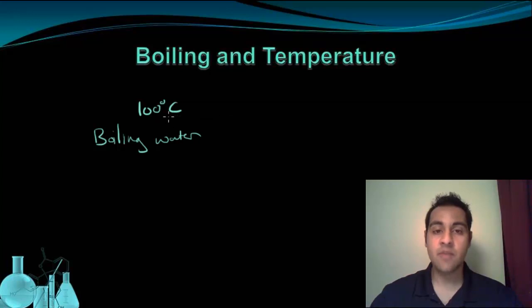Because the liquid can only get to 100 degrees Celsius. Anything that gets hotter becomes steam and leaves the liquid. So the thermometer could only ever get to 100 degrees Celsius in the boiling water. And we call that the boiling point.